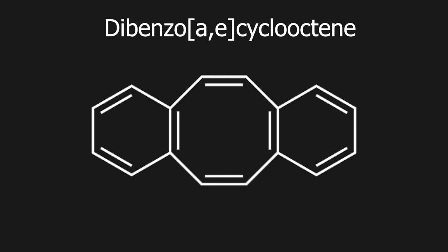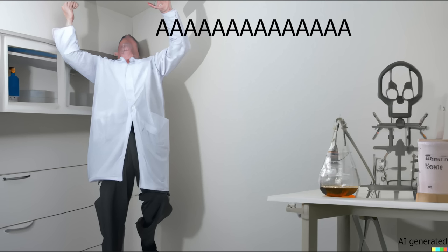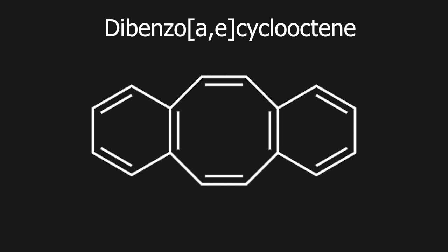In this video I will be making dibenzo[a,e]cyclooctene, which is a strong binding ligand for transition metal ions. Its complexes show interesting properties for catalysis, but applications are quite limited since it has been poorly accessible. In recent years, there have been developments in synthesizing this ligand on a multigram scale. So for this video, I will be following the whole procedure to synthesize this ligand.